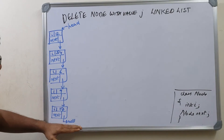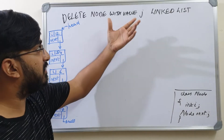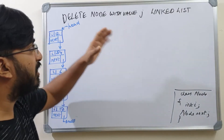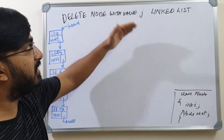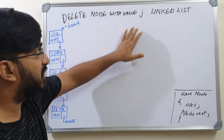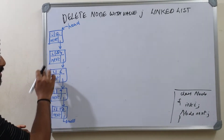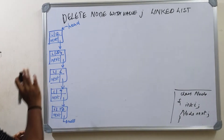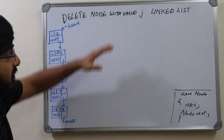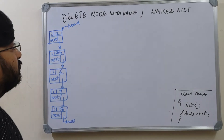Next of the last location is pointing to null. The point of removing a value with j is wherever you find the first match of j. Suppose if I want to remove j equals 6, I should be able to remove that node from the linked list. I'll write the method first and then demonstrate how this works.